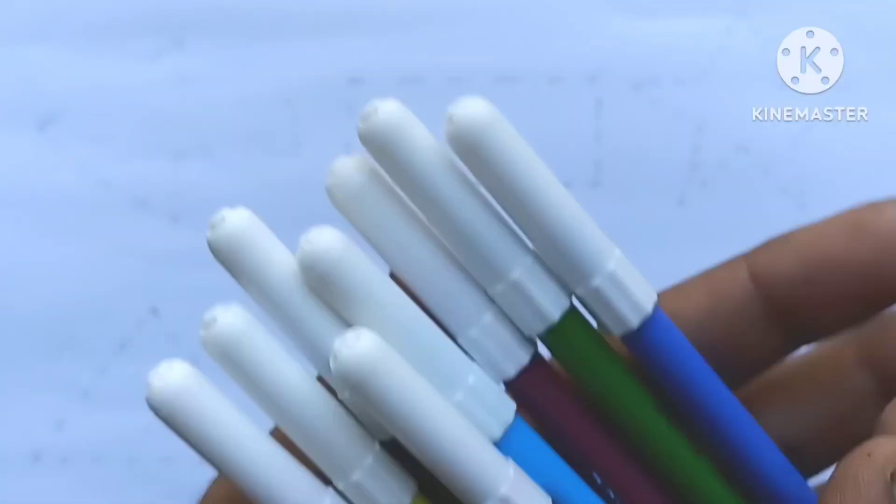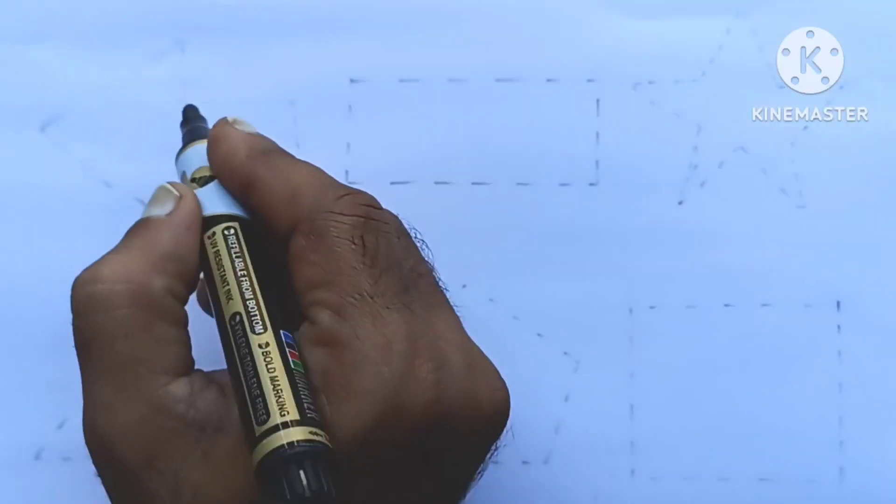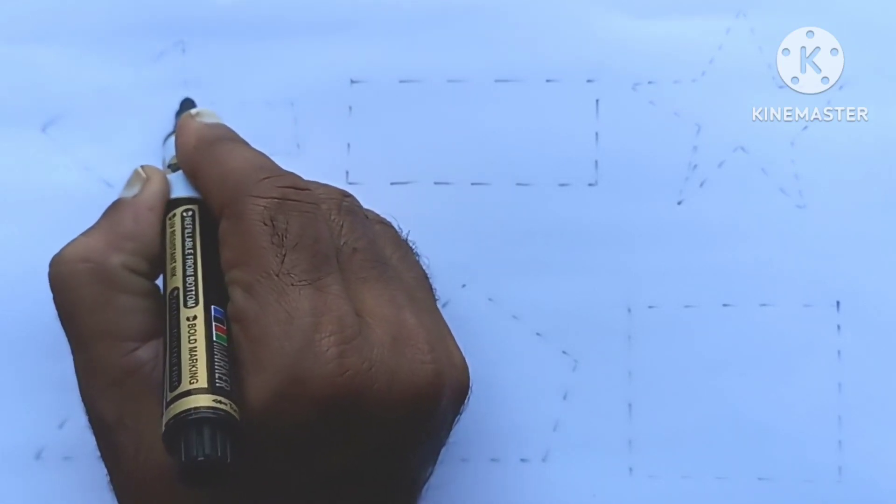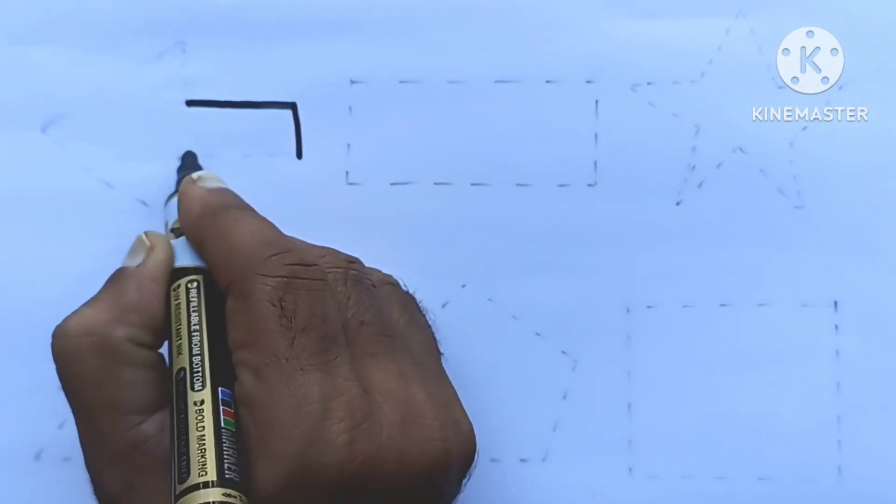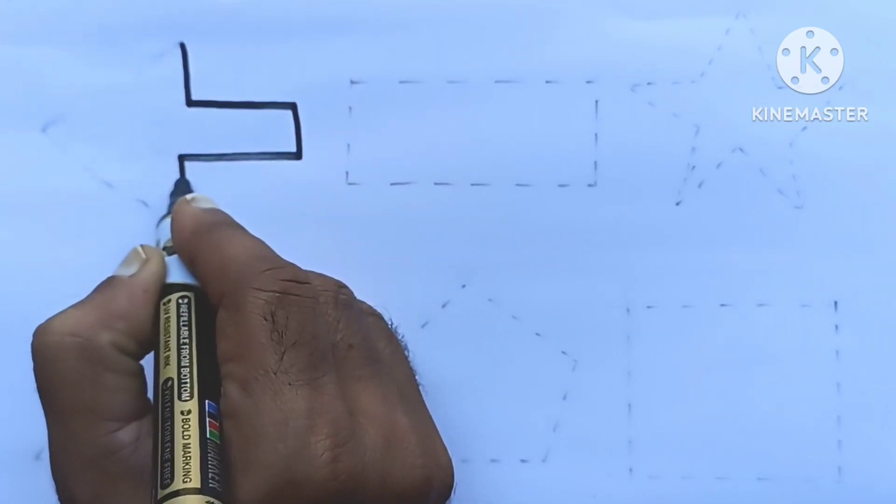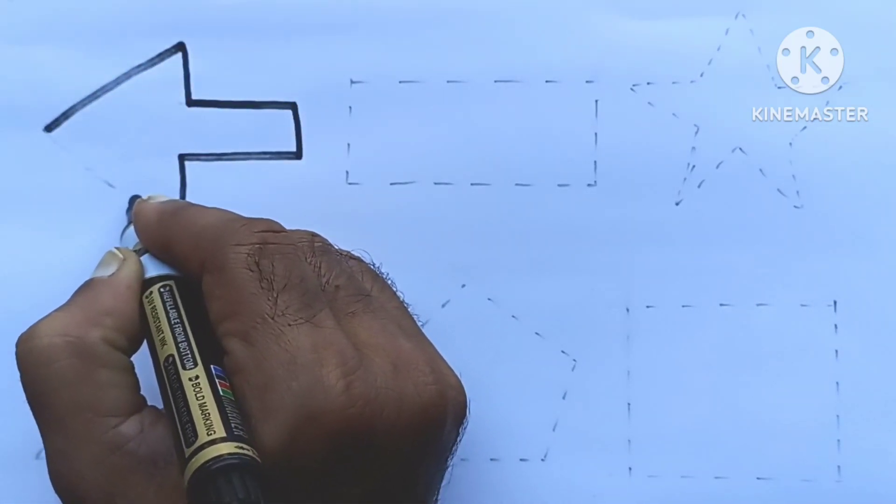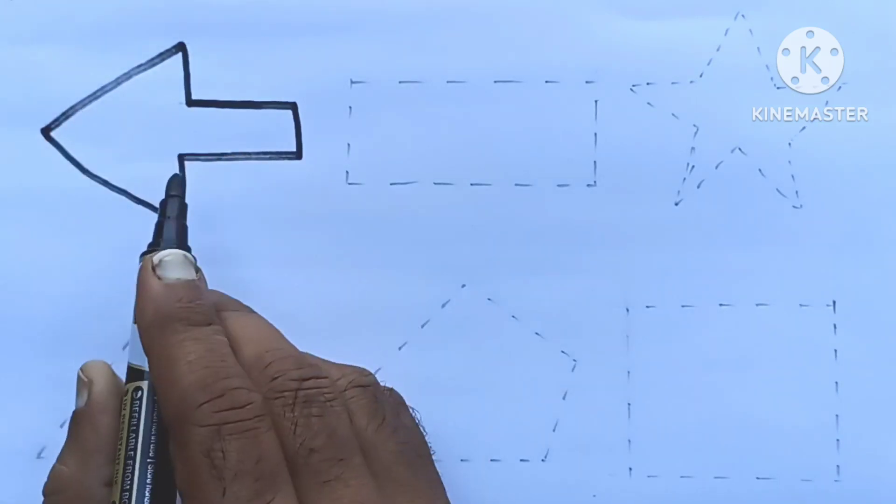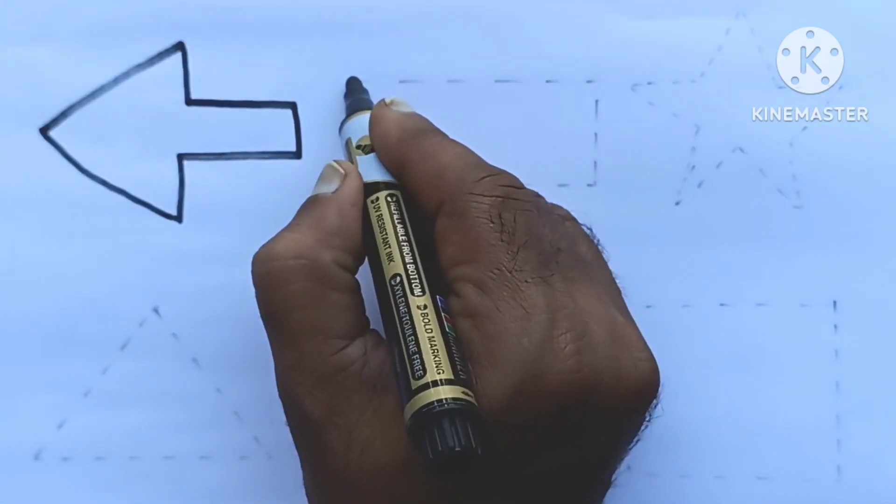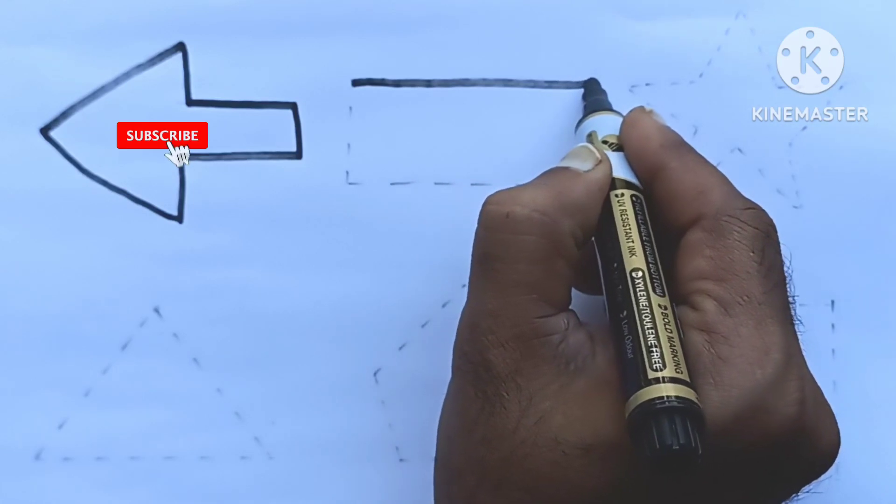Look at this, draw 2D shapes. Arrow, rectangle, we are drawing rectangle.